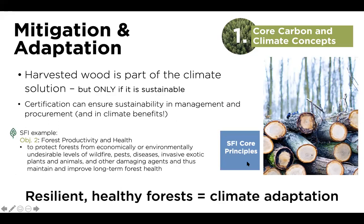Here's a really specific example from one of the SFI guiding standards — their core principles, which highlight the role of forest productivity and health. This could be linked to adaptation: to protect forests from economically or environmentally undesirable levels of wildfire, pests, and disease, and maintain long-term health of the forest. This can also be viewed explicitly through a lens of climate adaptation — a resilient, healthy forest is climate adaptation fundamentally. And especially with uncertainty and changing conditions going forward, these resilient healthy forests are our best bet to not lose carbon over time. These are the ways we're trying to explicitly link principles from the climate smart forestry space to the forestry industry community.